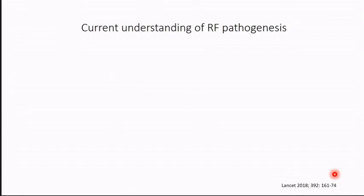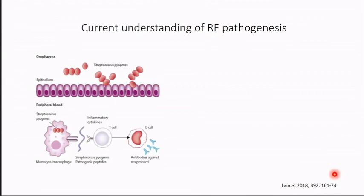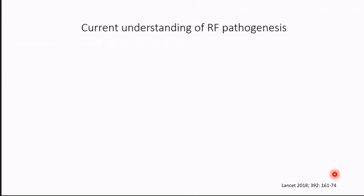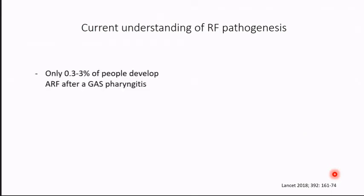We recently reviewed the current understanding of rheumatic fever pathogenesis for the Lancet. You have an acute streptococcal infection which triggers an antibody response, and there is molecular mimicry to some proteins present in the heart, leading to active inflammation and damage. Nothing much has changed in the last 30 years with regard to pathogenesis. We still don't understand why only some people develop ARF after group A strep pharyngitis.